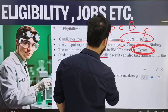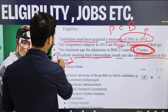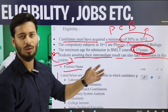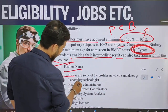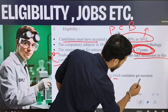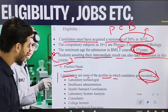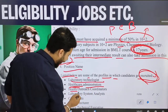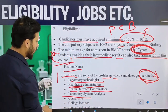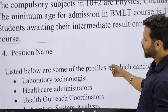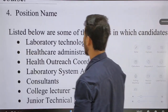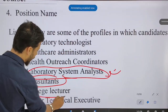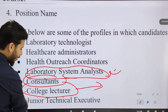Students awaiting their intermediate results can also take admission in this course. Listed below are some of the profiles in which candidates get recruited: Laboratory Technologist, Health Care Administrators, Health Outreach Coordinators, Laboratory System Analysts, Consultants, College Lecturers, Junior Technician, and Executive roles.